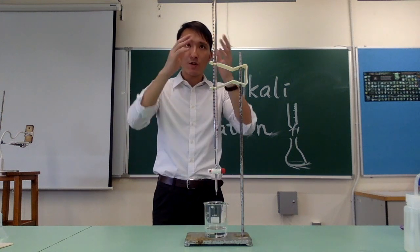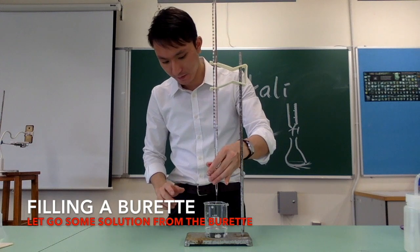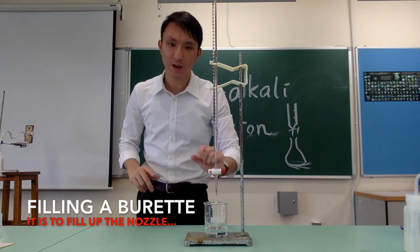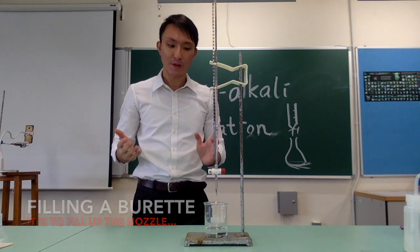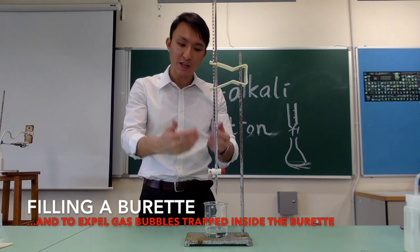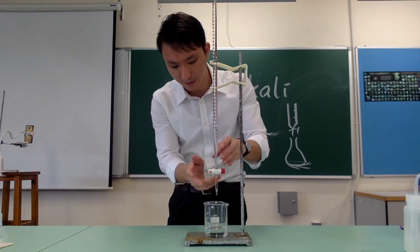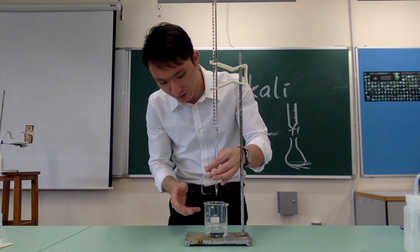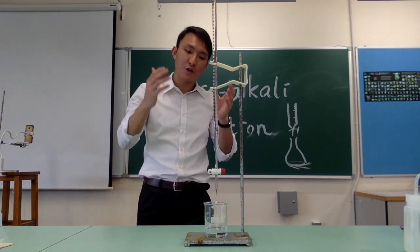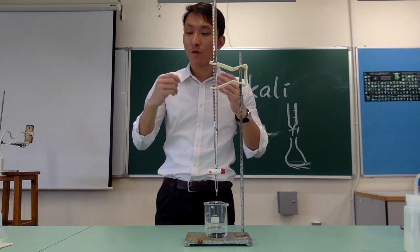Before using the burette for titration, release some solution first. This serves two purposes: first, to fill the lower nozzle with liquid, because otherwise you will get a wrong volume reading; second, to expel any gas bubbles trapped inside the burette. After releasing some solution, check for gas bubbles. If there are any, tap them away or continue releasing solution until no bubbles remain.